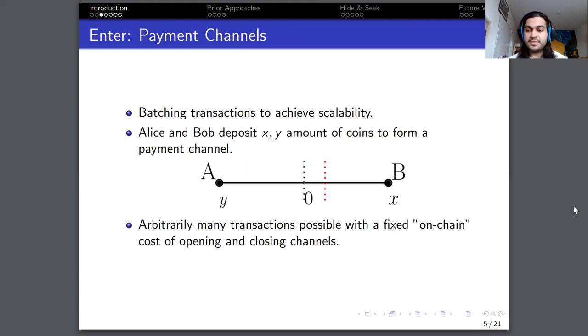And that's where Payment Channels come in. Payment Channels are a scalability solution that attempt to batch transactions. Instead of uploading every single transaction on the ledger, on the blockchain, we first create a payment channel with one on-chain transaction. So Alice and Bob over here can create a channel between each other by depositing x and y amount of tokens, and then the payment channel is formed with a starting balance, which is indicated by the green line of zero.